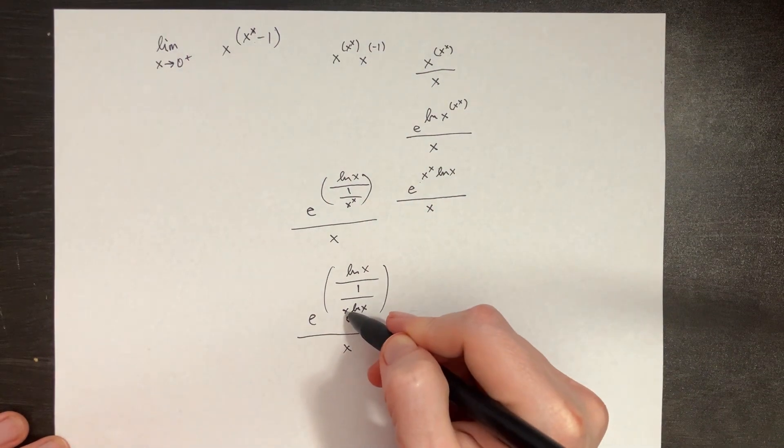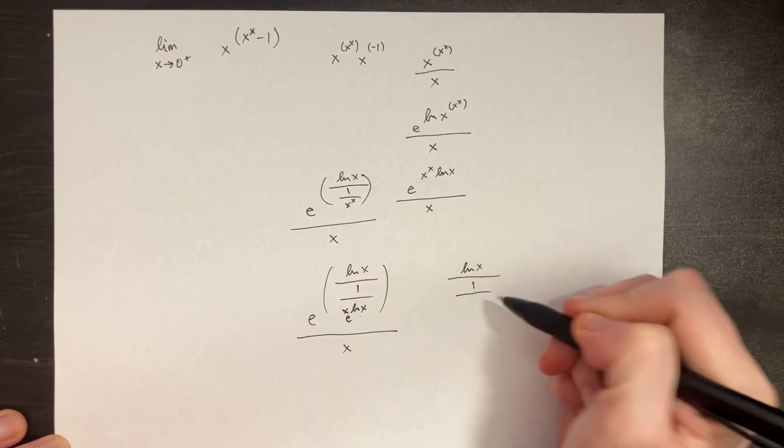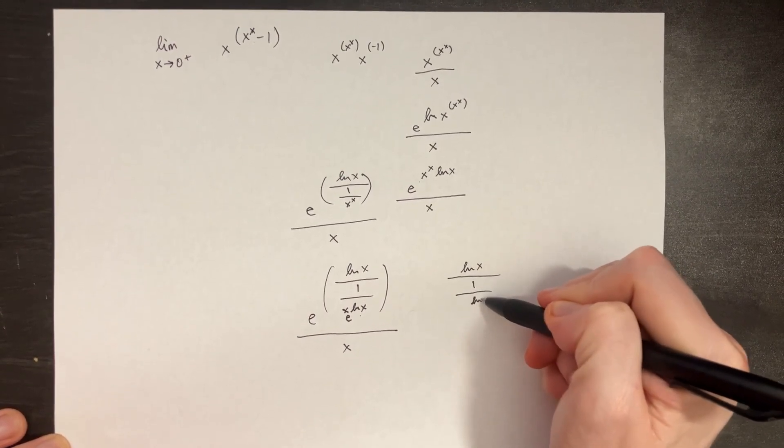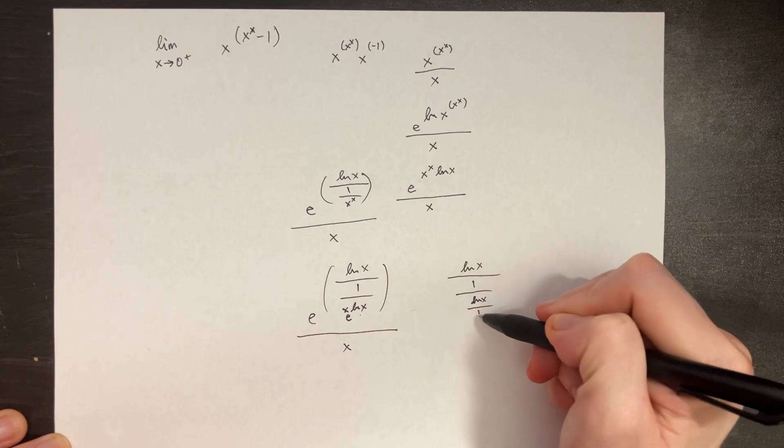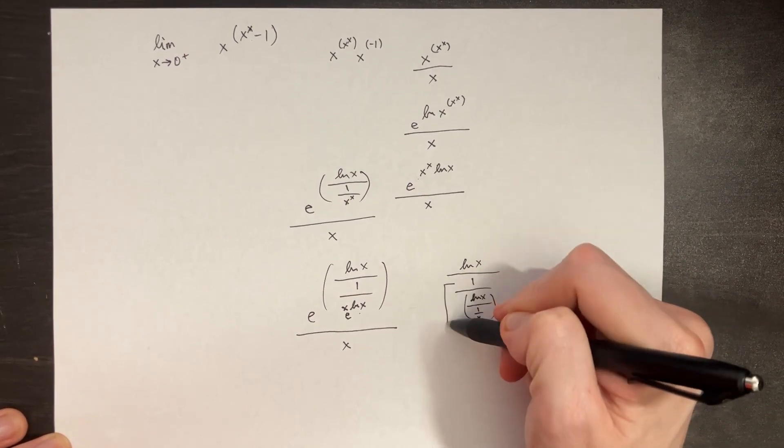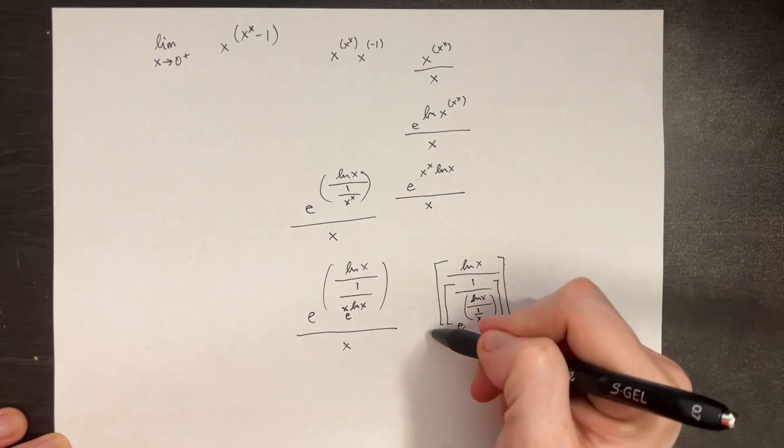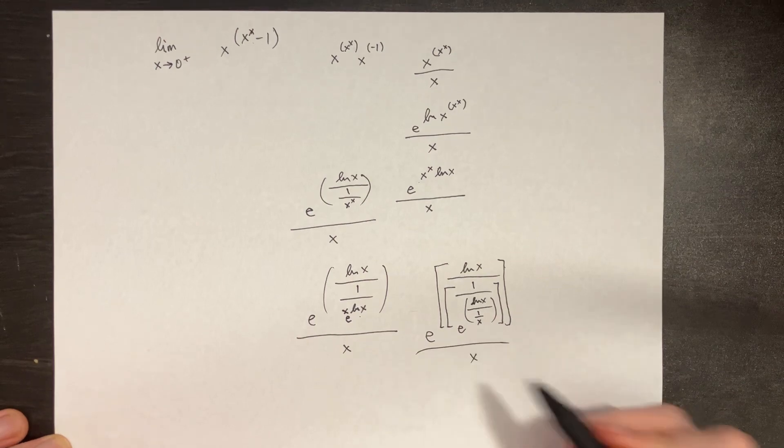Let's take one more step here and move the x underneath by doing something like this: ln of x divided by 1 over x. This is all to the e. So all in the denominator here. This whole thing is to the power of e, all this to the x.